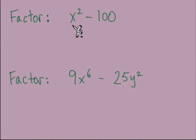Two factoring problems. The first one is to factor x squared minus 100, and the second one is factor 9x to the sixth minus 25y squared. So take a few minutes to work these problems out, you can pause the video, and when you're finished come back here and we'll look at the answers together.